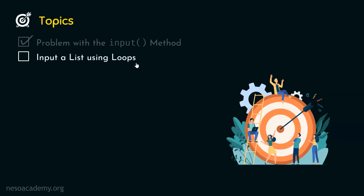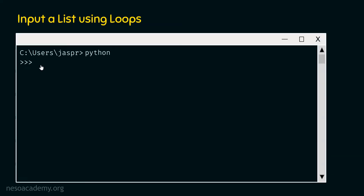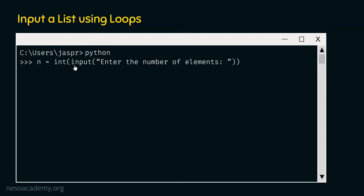Let's understand how to input a list using loops in Python. The first step is to ask the user to enter the number of elements they want to enter. We type: n = int(input('enter the number of elements')). We receive the input with the input method, passing the prompt string. We typecast it using int so we receive an integer, not a string. Then n points to the value received from the user.